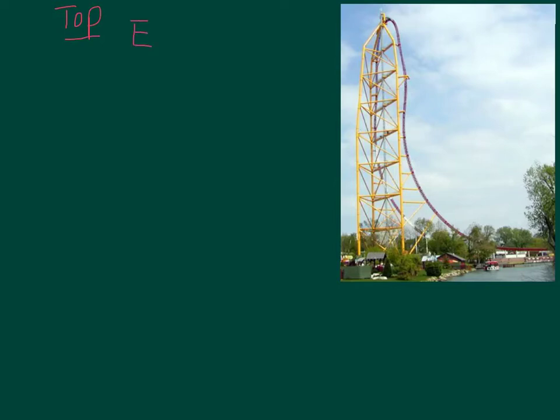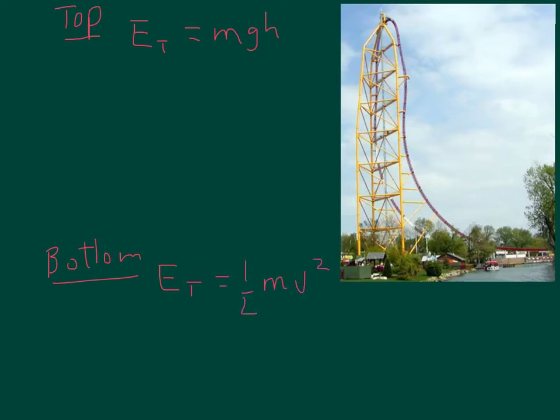At the top, the total mechanical energy is equal to just gravitational potential energy, or mgh. We know g is gravity, and h, which is the total drop, was 120 meters — but again, don't worry about the mass. At the bottom of the hill, we can't go any further down, so the total energy of the system is just kinetic energy, or one-half mv squared. The v is actually what we're looking for, and we don't know the mass of the cart, but you'll see how that doesn't really matter.